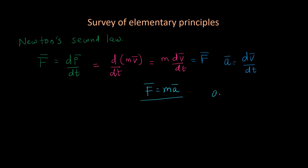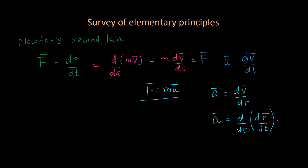Acceleration a-bar equals dv-bar/dt. Since v-bar equals dr-bar/dt, we have a-bar equals d²r-bar/dt². This is a second-order differential equation, and if you can solve it with certain initial conditions, you will get the solutions you want.